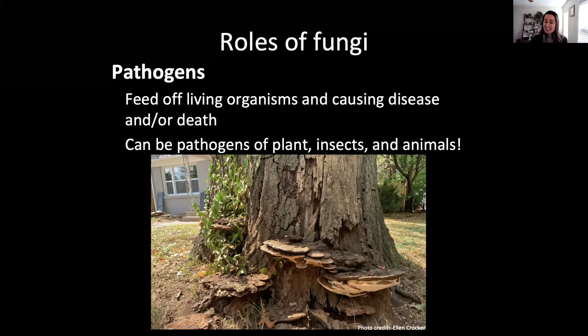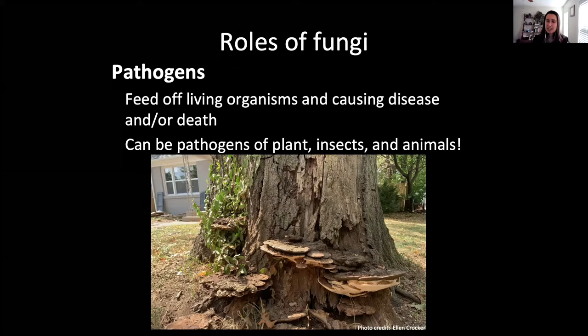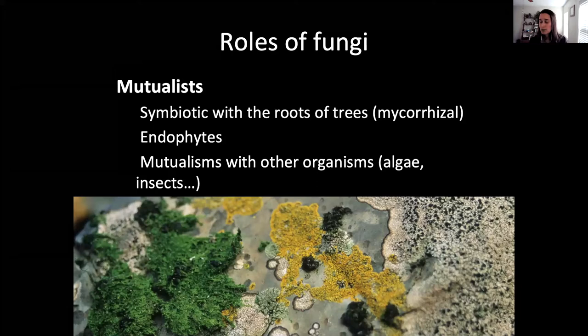Fungi can be pathogens not just of plants but also of insects. There are all sorts of fungi that feed on insects — sometimes it can look really gruesome, like a zombie-attack by a Cordyceps fungus. Sometimes this can be beneficial, using these fungal pathogens for insect control. They can also be pathogens of humans and animals: things like ringworm and dandruff have fungal roles as well.